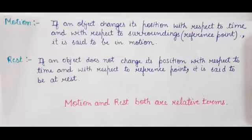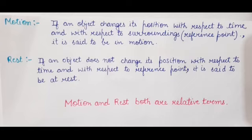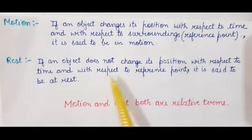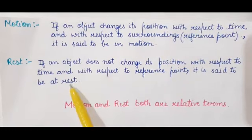So, how to define motion? If an object changes its position with respect to time and with respect to its surroundings — or we can say reference point — it is said to be in motion. When an object changes its position with respect to time as well as with respect to the reference point, that object is said to be in motion. An object is said to be at rest when it does not change its position with respect to time and with respect to the reference point.